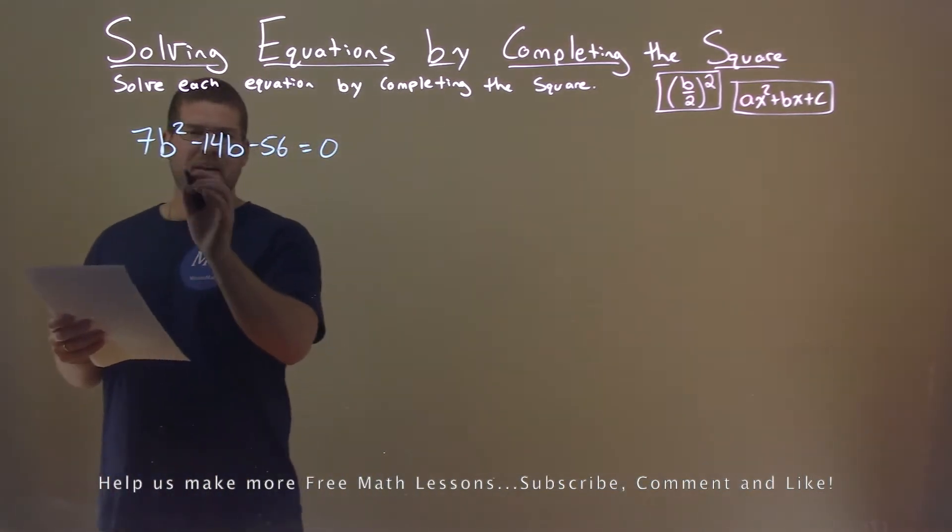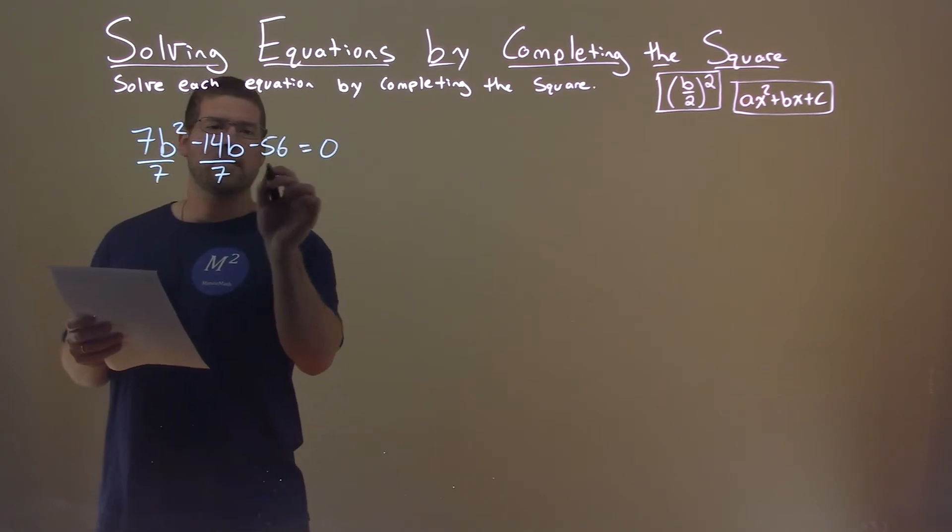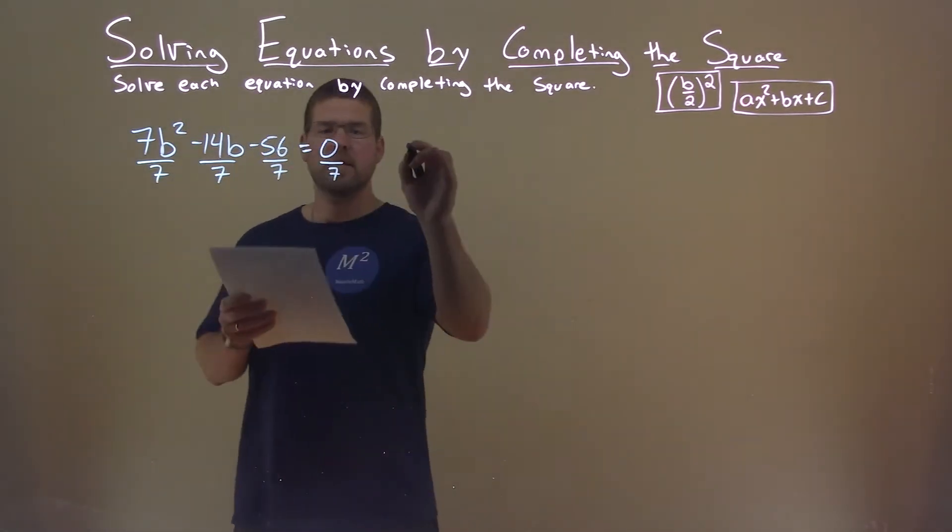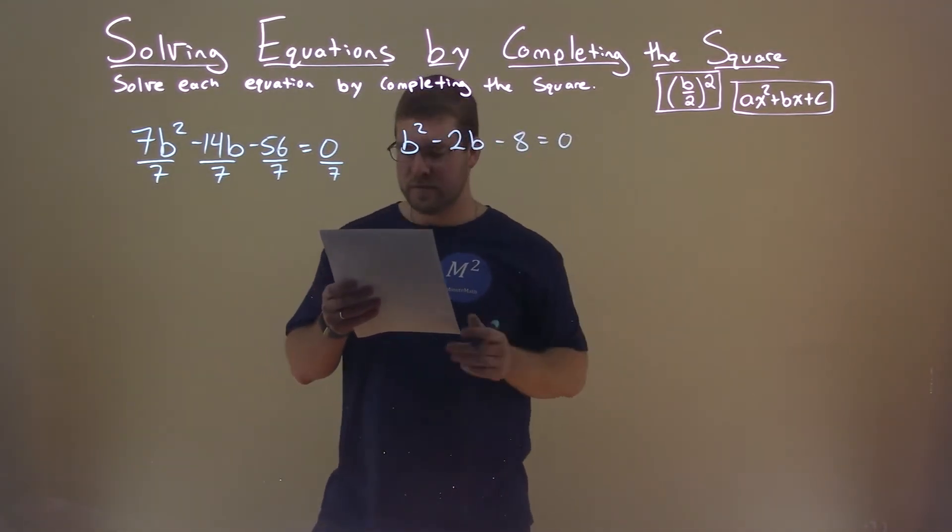Well, I don't like having a value that's anything else besides 1. So I'm going to divide all parts here by 7. That leaves me with b squared minus 2b minus 8 equals 0.